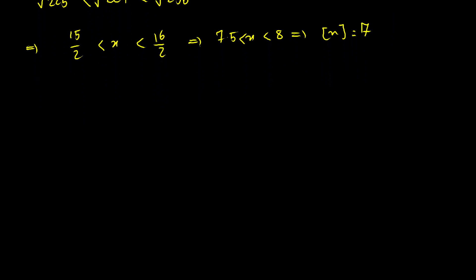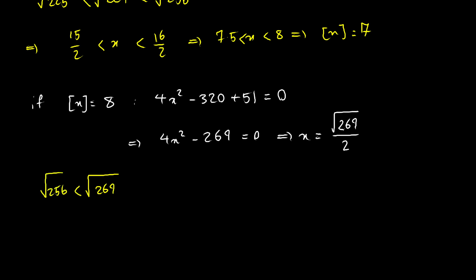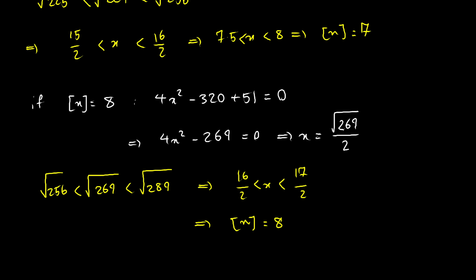Assume floor of x equals 8. We have 4x squared minus 320 plus 51 equals 0, giving 4x squared minus 269 equals 0, so x equals √269 over 2. To check: √269 lies between √256 and √289, so x lies between 16 halves and 17 halves. Therefore floor of x equals 8, which is true — this is another valid solution.